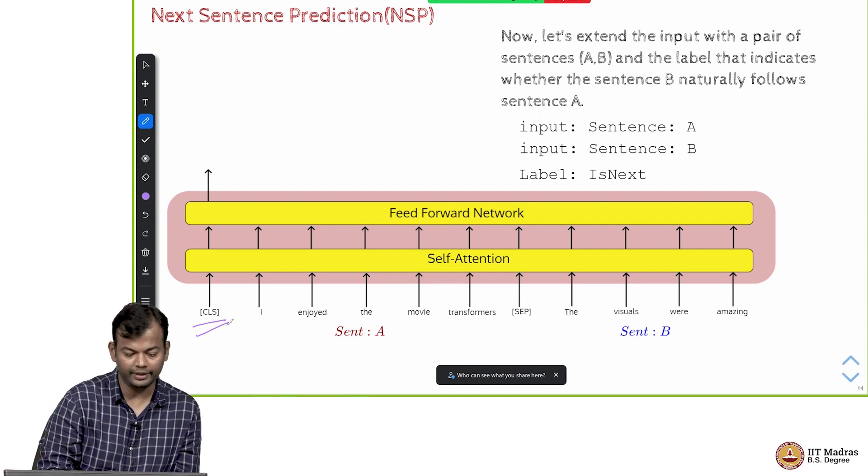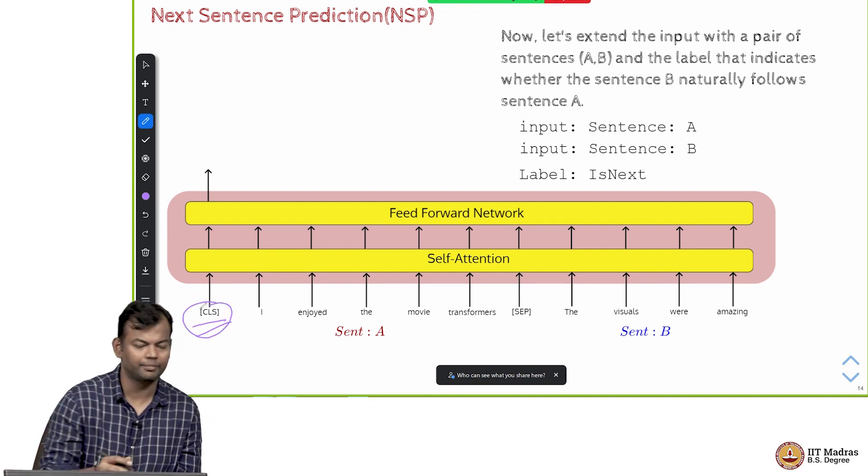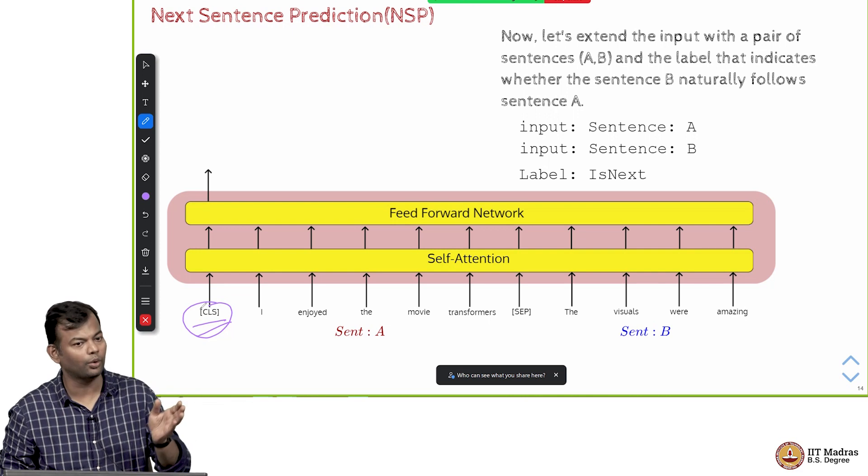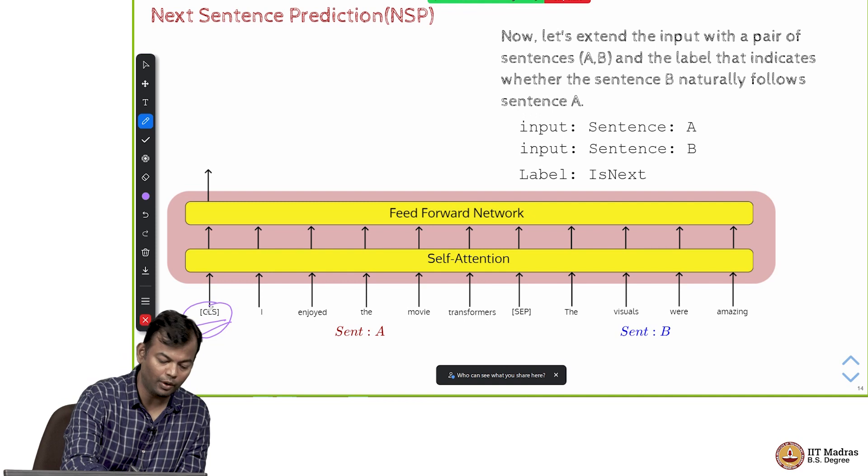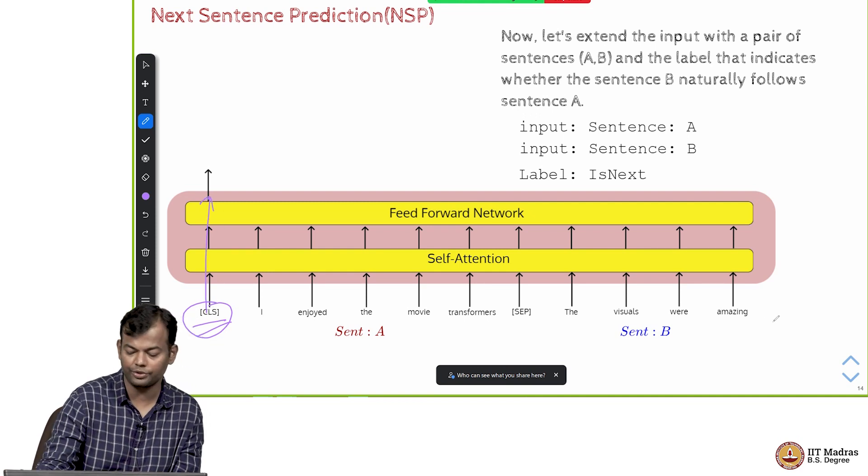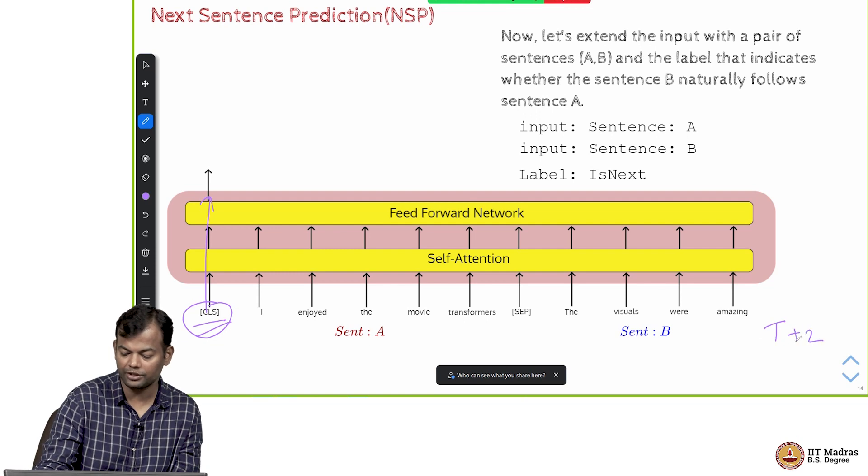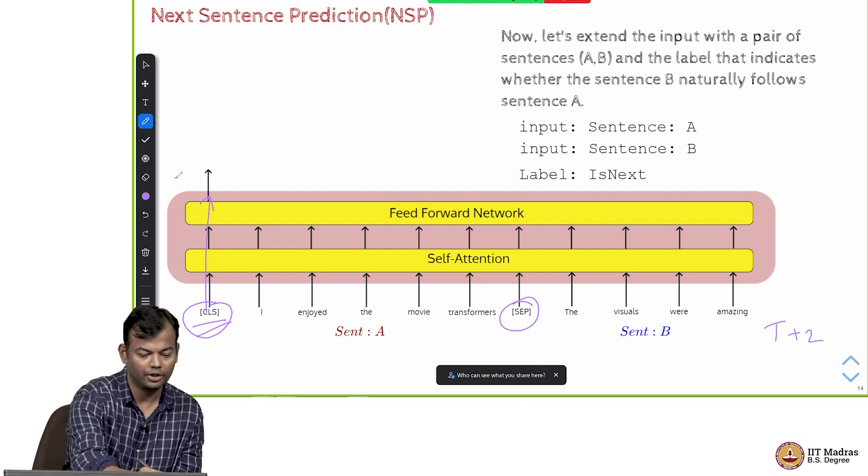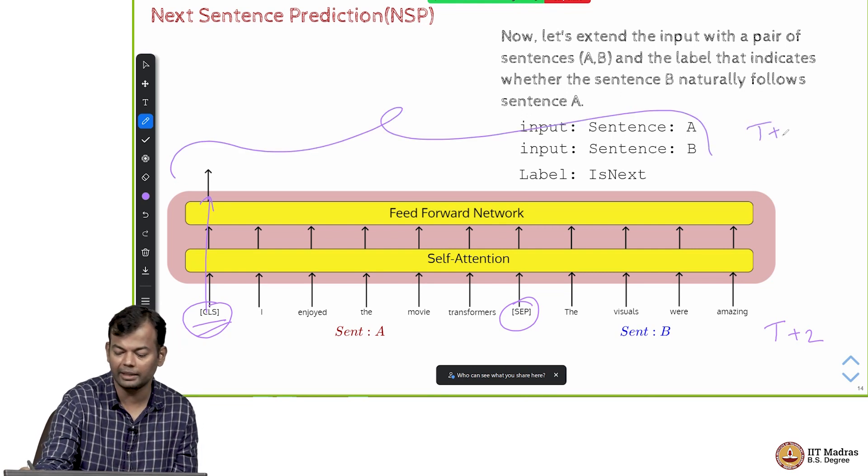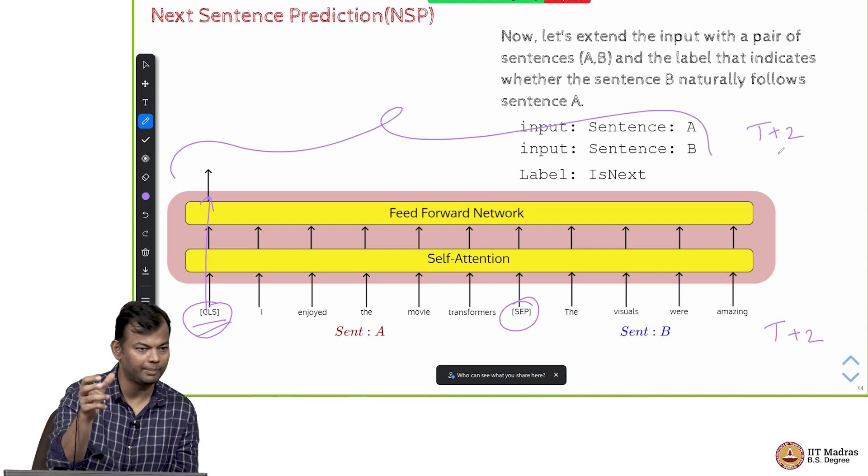This CLS is like a special token or the start of the sentence. This will also pass through the transformer, and suppose your original sequence length was T, now it is T plus 2 because you have one token for the separator and one token for CLS. At the output it will predict T plus 2 tokens or T plus 2 representations.